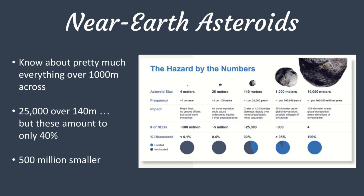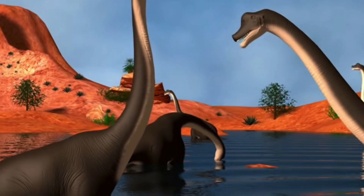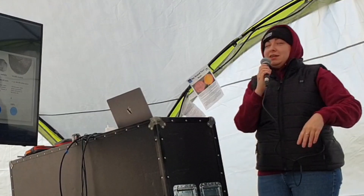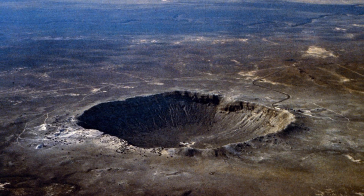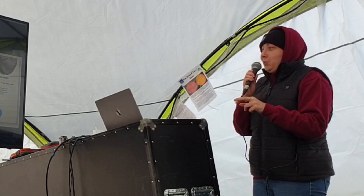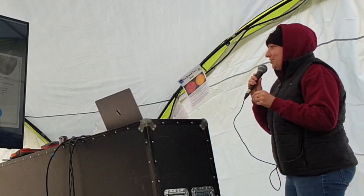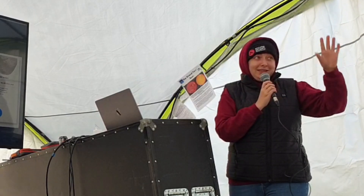The good news is we know about pretty much everything that's a kilometre or bigger — and a kilometre or bigger is kind of a dinosaur-ending event. We know about 25,000 which are 140 metres or bigger, and 140 metres is going to wipe out your city — not completely ravage the entire planet, but London's gone sort of thing. Unfortunately, those 25,000 are only about 40% of those city-destroying asteroids out there, so about 60% we don't know where they are. And then of course there are hundreds of millions which are even smaller, and those we haven't got a clue about.